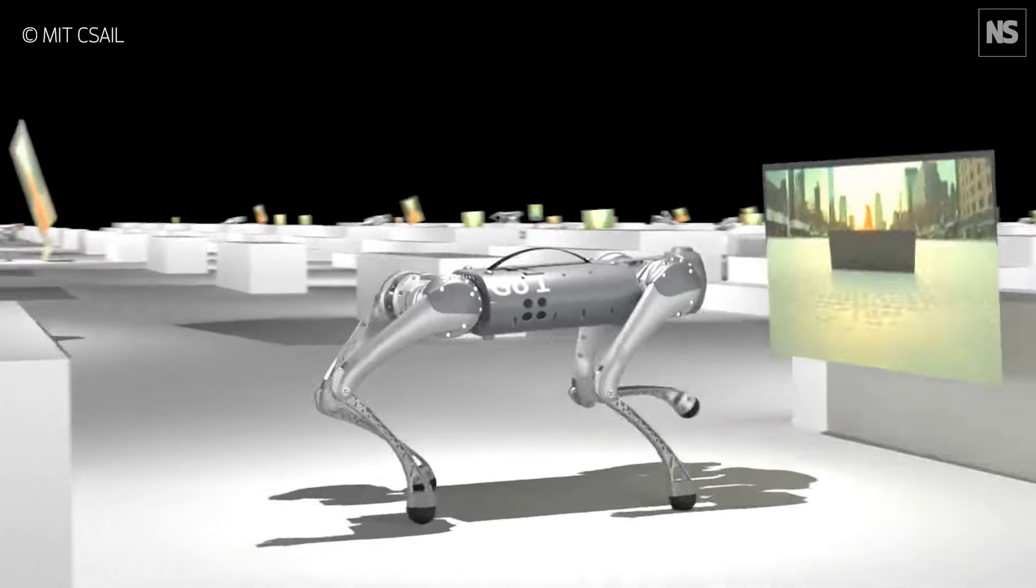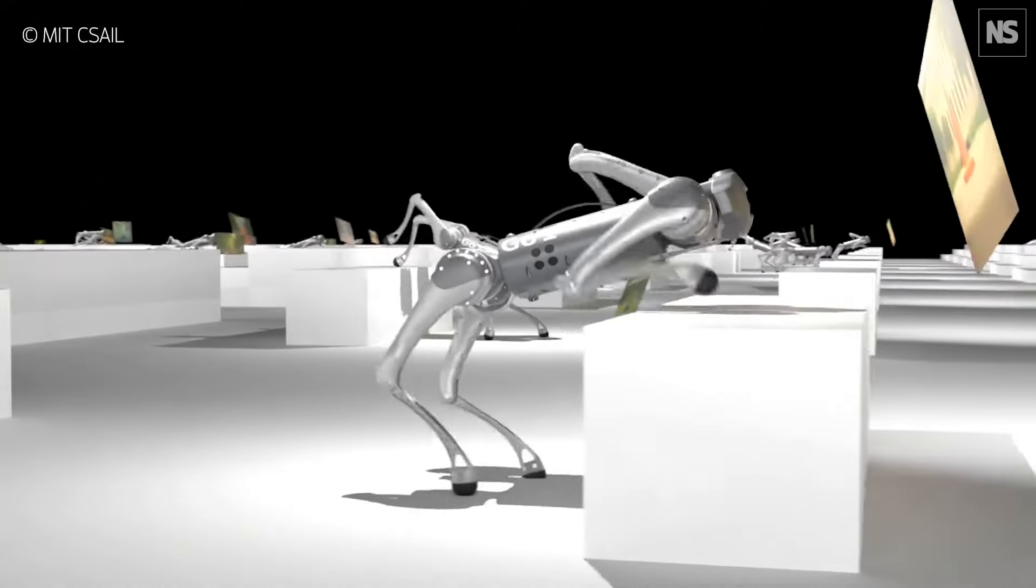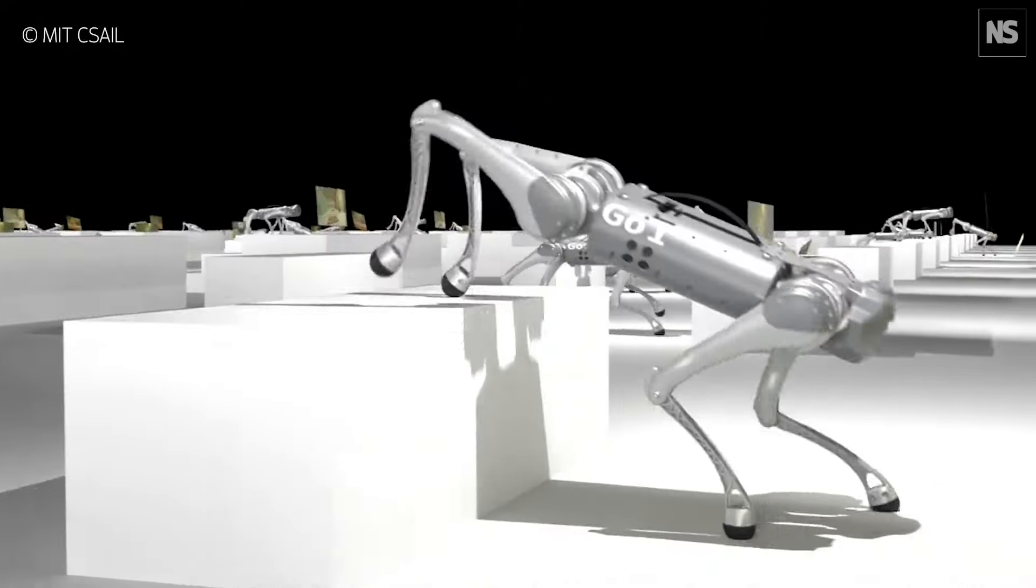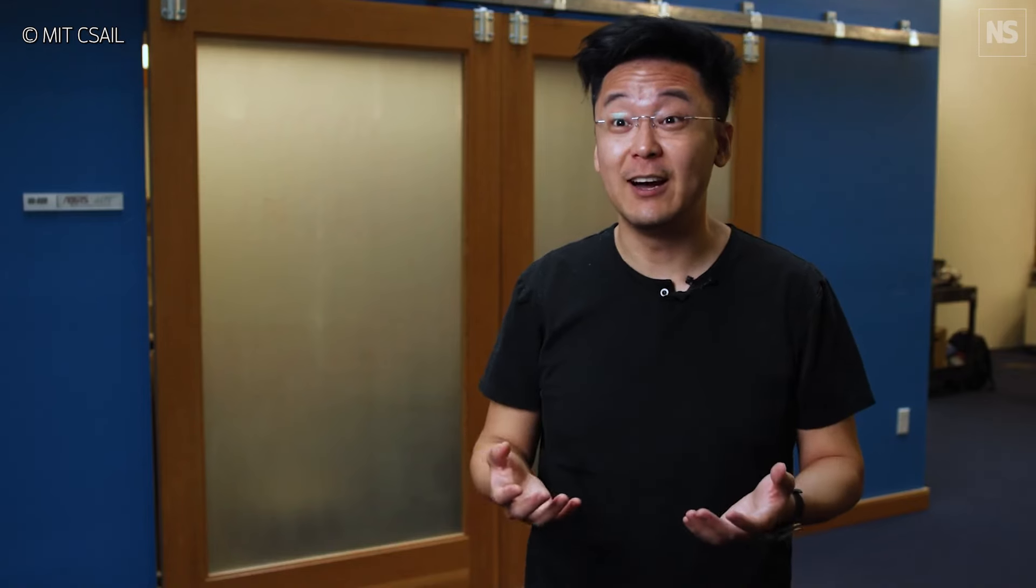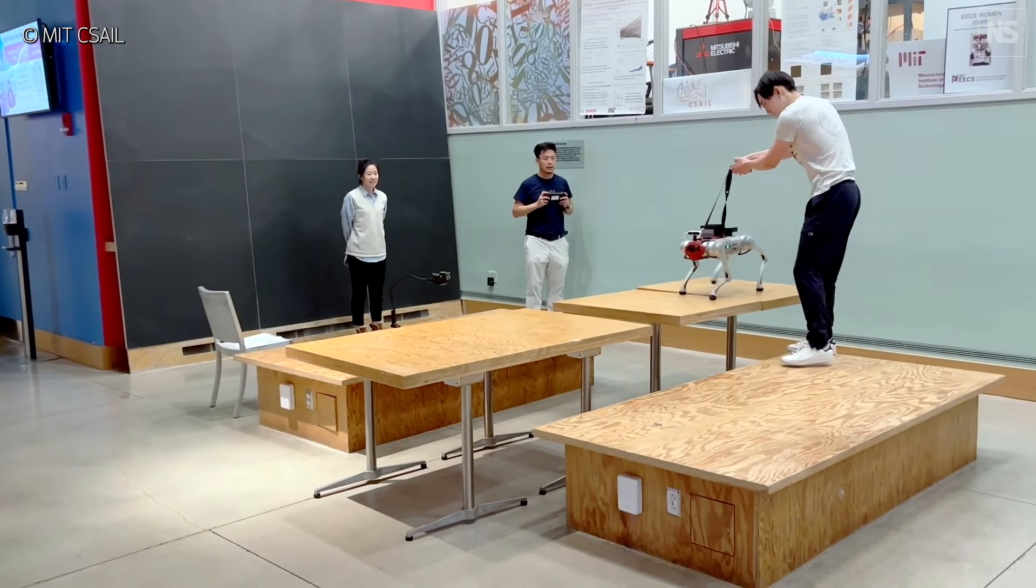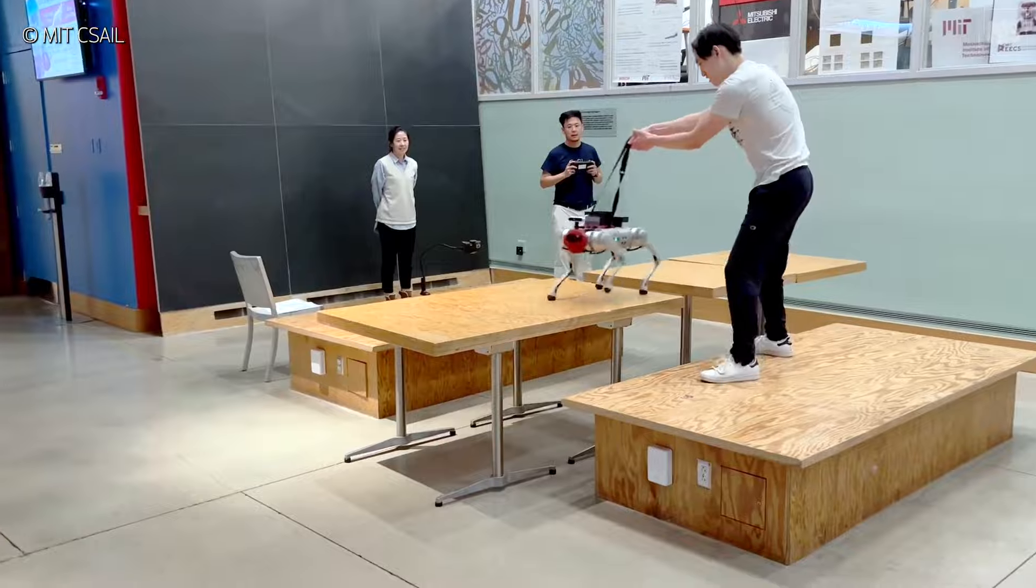If you just teach the robot using data from another robot it wouldn't work very well. So it's really important for the robot to learn from its own data that's generated by its own actions and this type of data is called on-policy data.